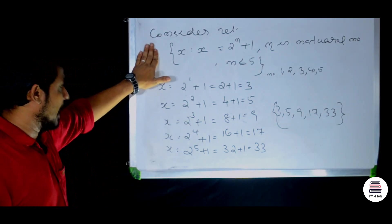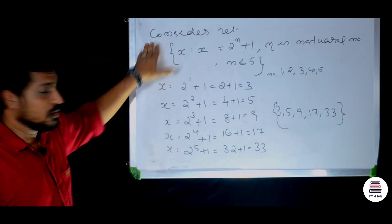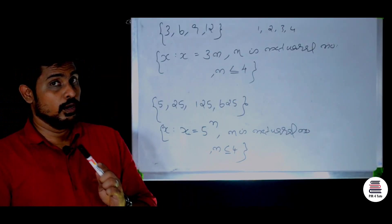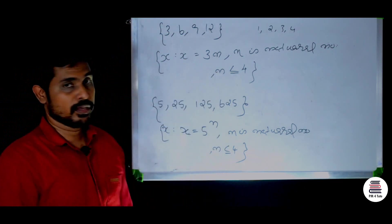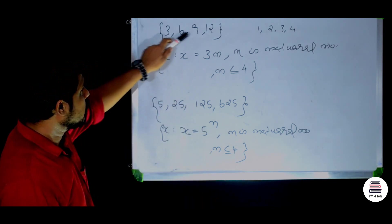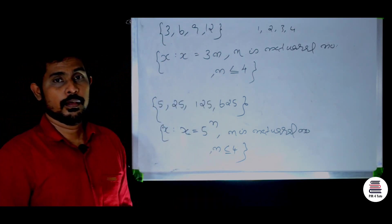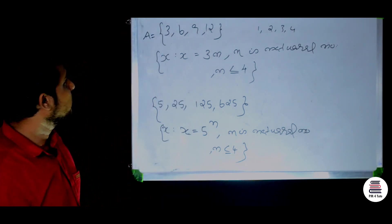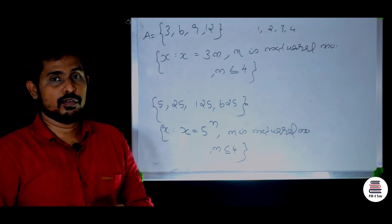Converting the set builder formula to roster formula. For the set A = {3, 6, 9, 12}, this is the set builder formula. Capital A contains elements 3, 6, 9, 12.